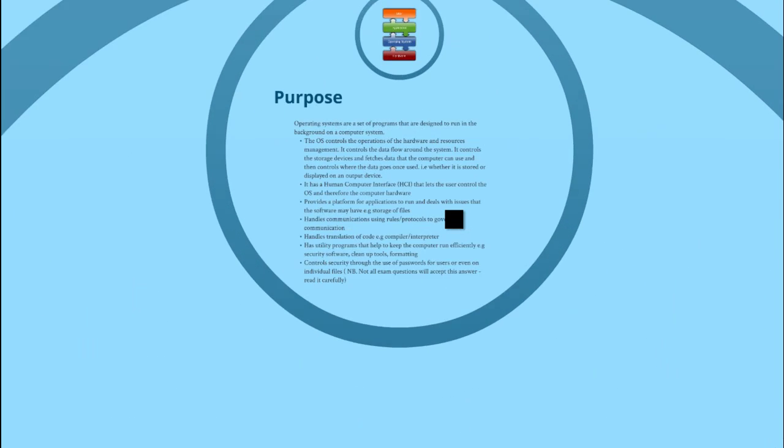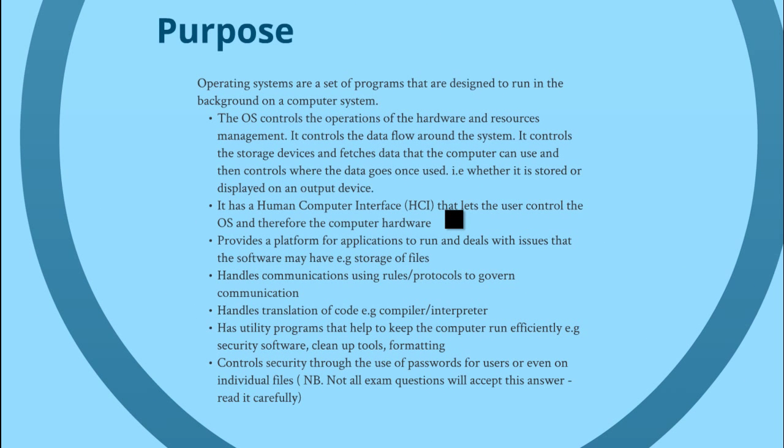Operating systems are a set of programs that are designed to run in the background on a computer system. It's a type of system software. That simple definition would be a one-mark answer. If you had a two-mark question, you might add one of the other points.